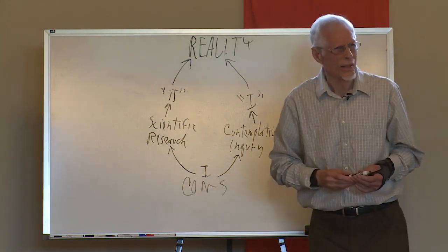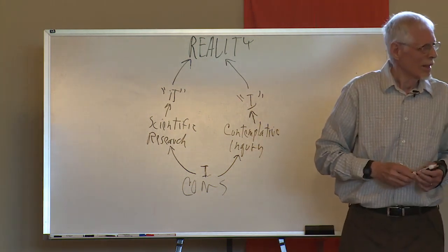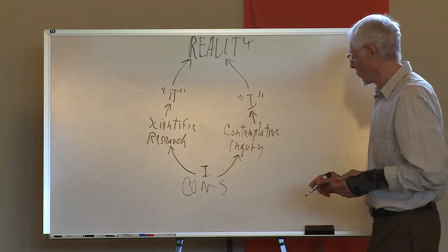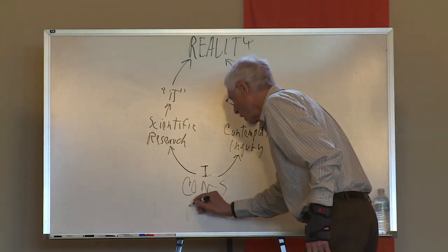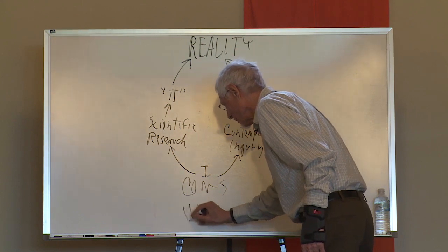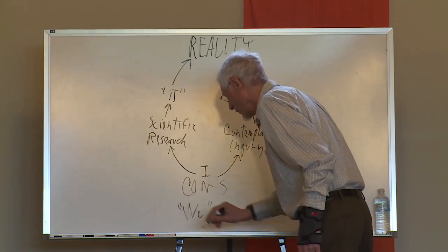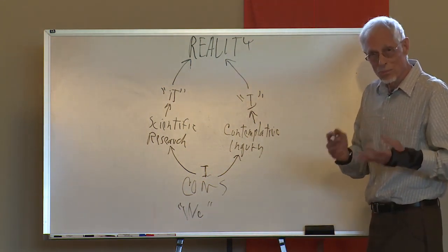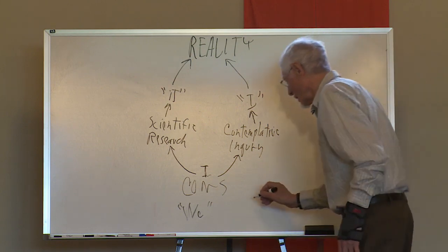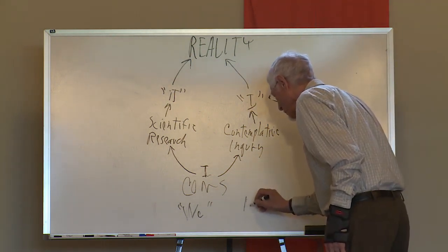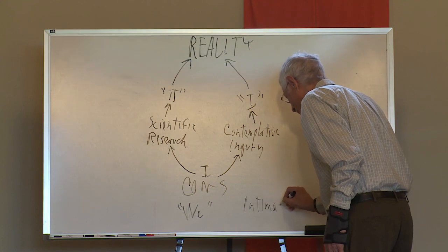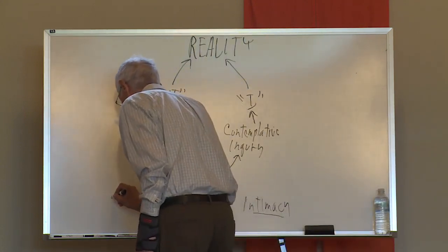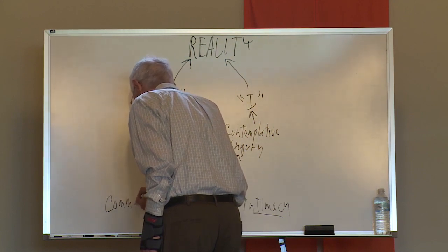Now this approach to truth idea I learned from Ken Wilber, and he has two other approaches to truth, both of which he calls the we approach. And the we approach has two subcategories: approach to intimacy and the approach to commonality. These are my words, not his, but I think that's what he means.